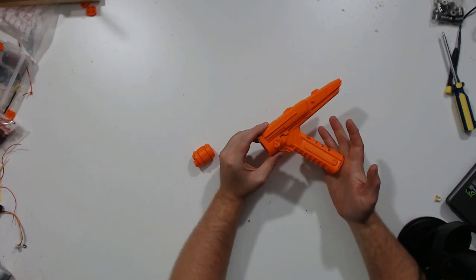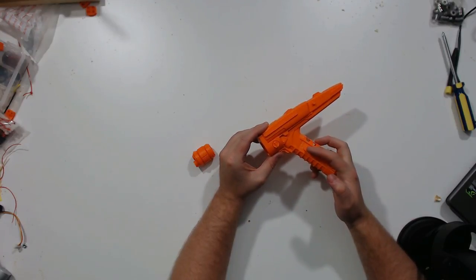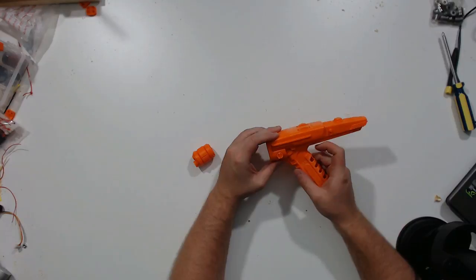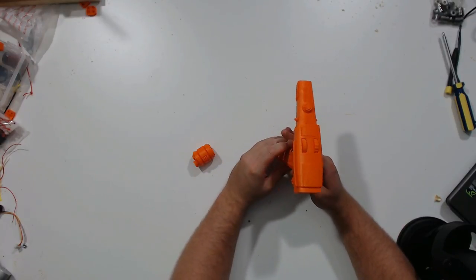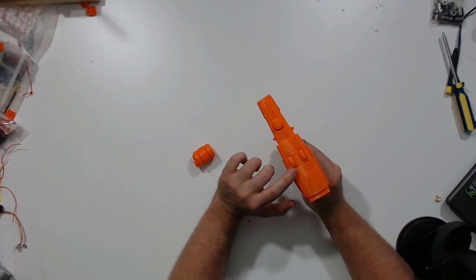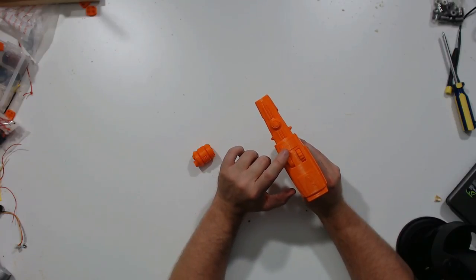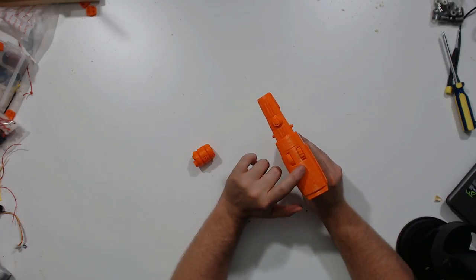And there you go, the seam almost disappears with a little bit of filing, it's going to be completely gone. Now you can see the detail work on this is really, really nice. The knobs on the top turned out absolutely accurate, as far as I can tell from the pictures.